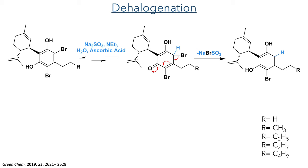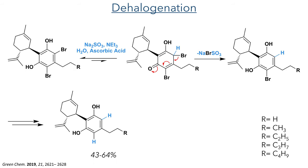With the alkylation complete, the final step was a dehalogenation reaction to remove the bromine atoms, which had acted as protecting groups throughout the synthesis. The reaction of the molecules with sodium sulphate, triethylamine, water and ascorbic acid promotes a tautomerism from an aromatic dihydroxyl enol-type species to an enone, which can undergo debromination to eliminate sodium bromine sulphite. This occurs twice to remove both bromine atoms and form the target molecules in yields of 43–64%. This synthesis is quite straightforward and easily scaled up, and will allow for the design and synthesis of more potential allosteric modulators.